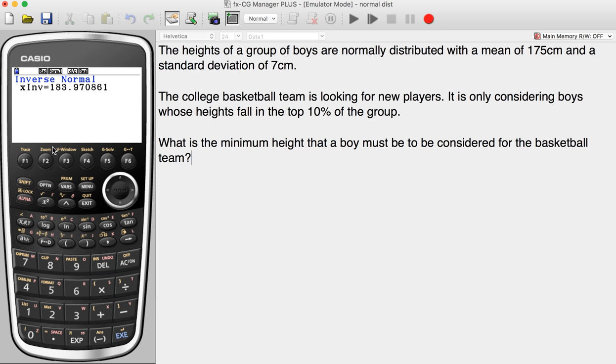So the minimum height for a boy to be considered on the basketball team is 184 centimeters, rounded to 3 significant figures.